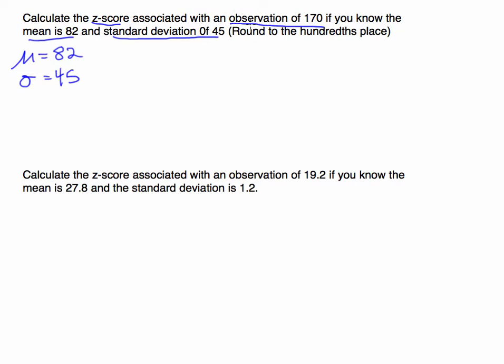And it's not just how far. It's telling you how many standard deviations away is that observation. So how many times do I have to add 45 to get to 170? So the formula for a z-score is the observation minus the mean divided by the standard deviation. This formula should make sense.